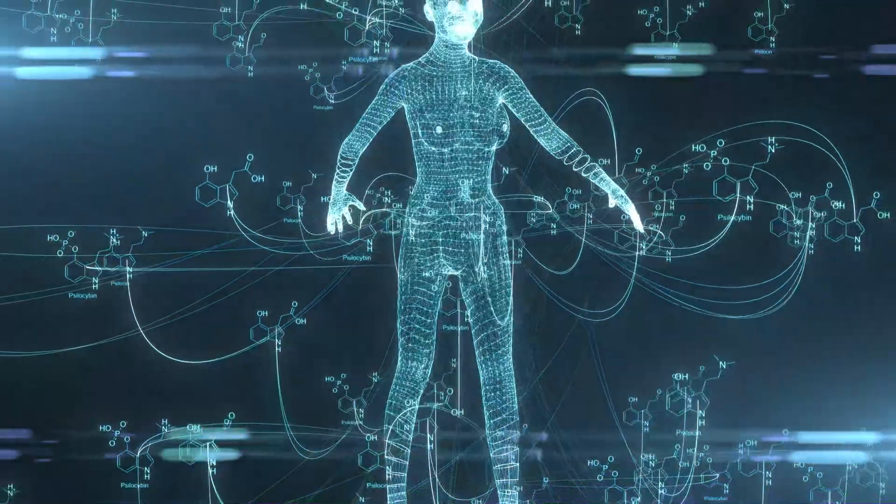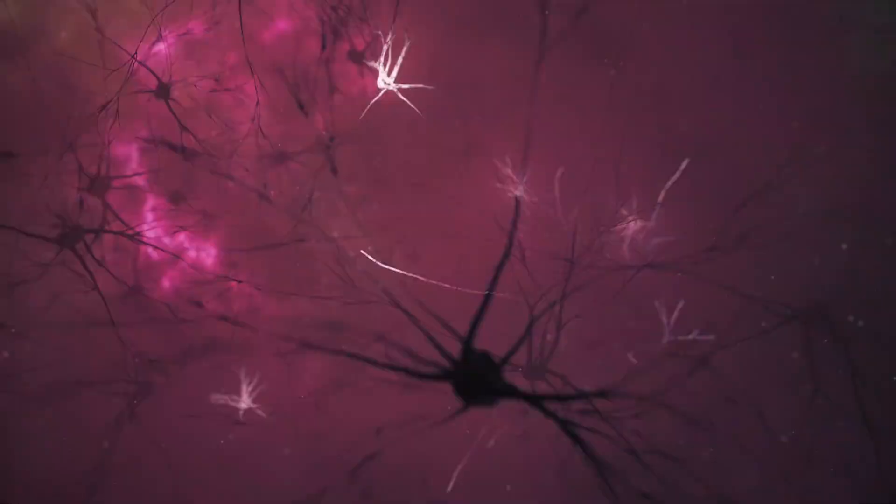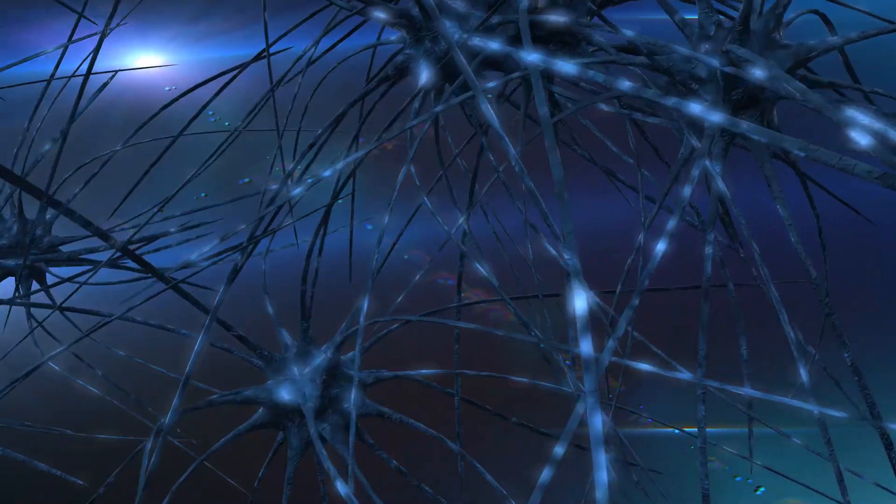Vitamin D maintains proper calcium balance in the body, which is essential for sending signals between nerve cells. Without enough D, your nerves are left in the dark—literally.